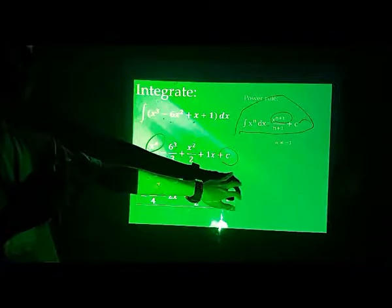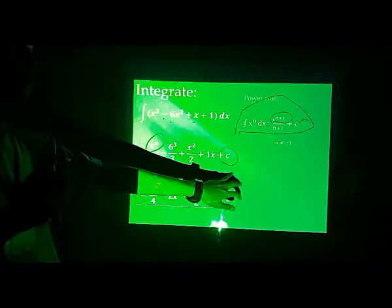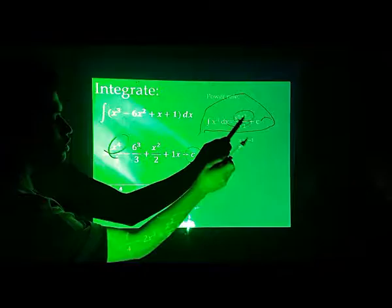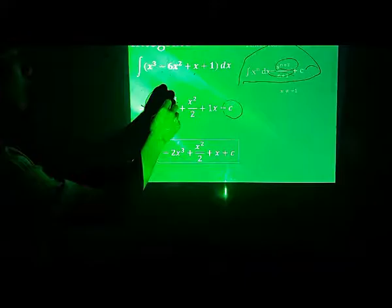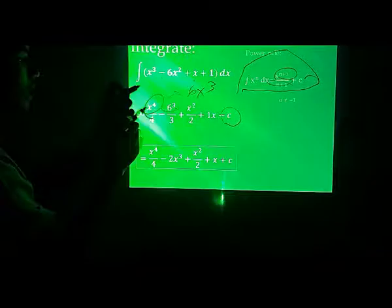And then, the c remains the same because it's a constant. The derivative of c is zero. Then, the denominator is n plus 1, which should not be equal to zero. So 3 plus 1 is 4, then 2 plus 1 is 3, and 1 plus 1 is 2. Then, simplifying the equation, x raised to 4 over 4 minus 2x cubed, which should be 6x cubed in the PowerPoint, so it simplifies to negative 2x cubed, plus x squared over 2 plus x plus c.